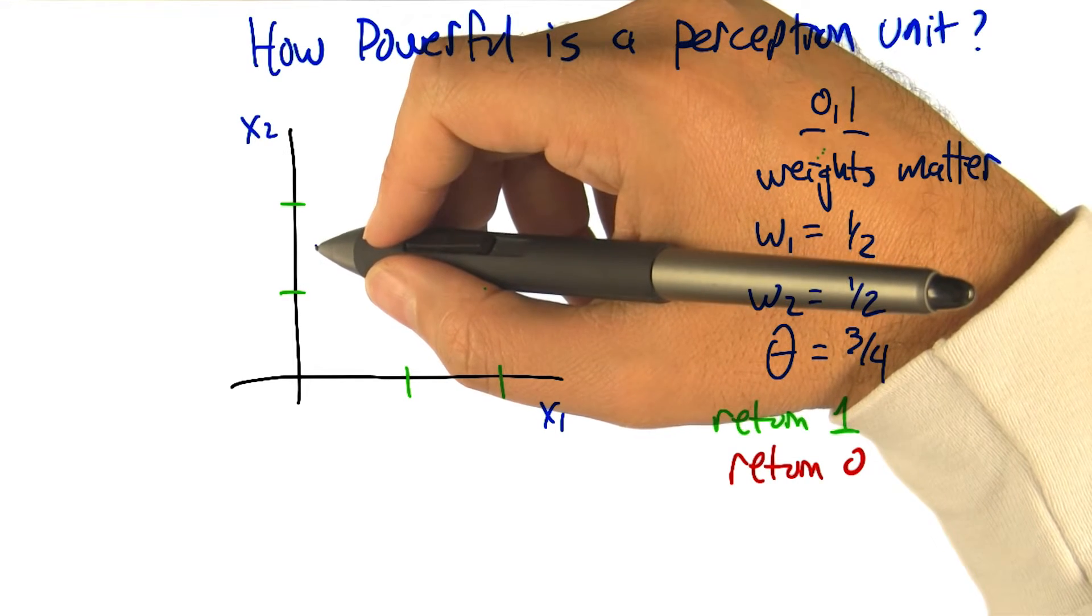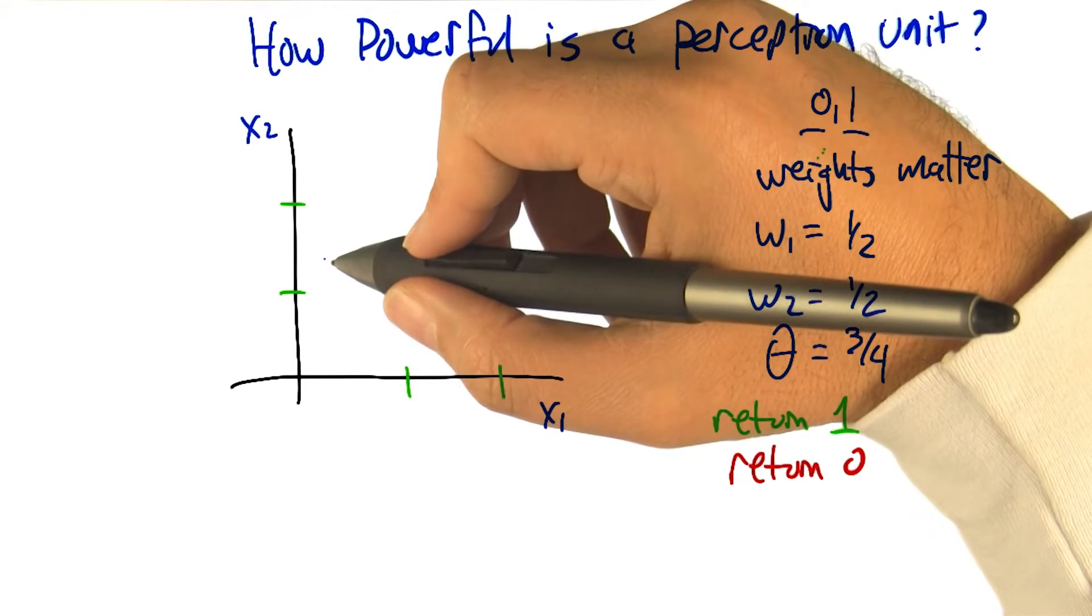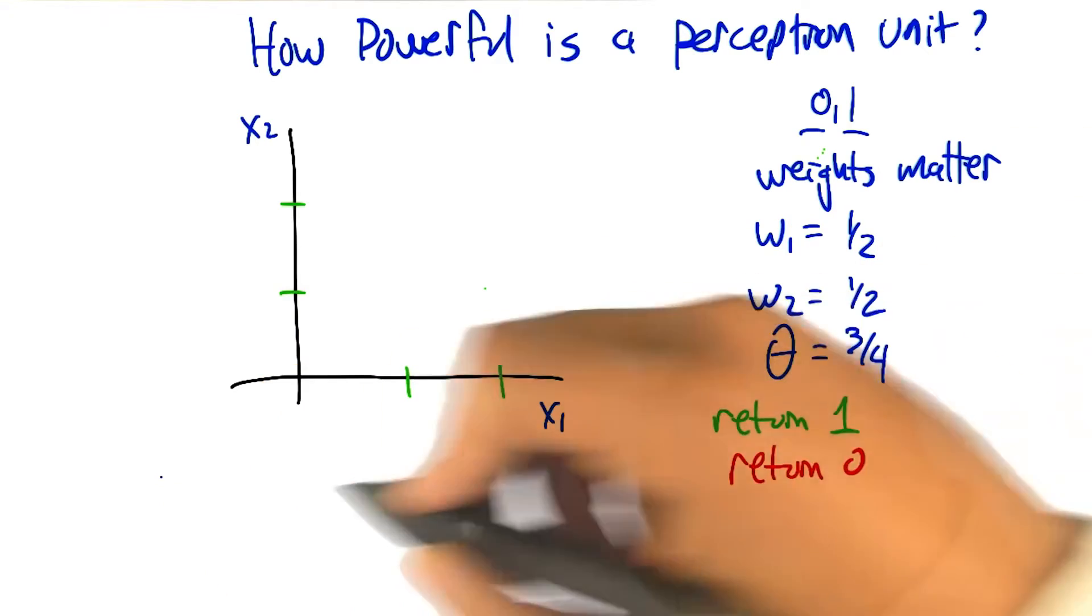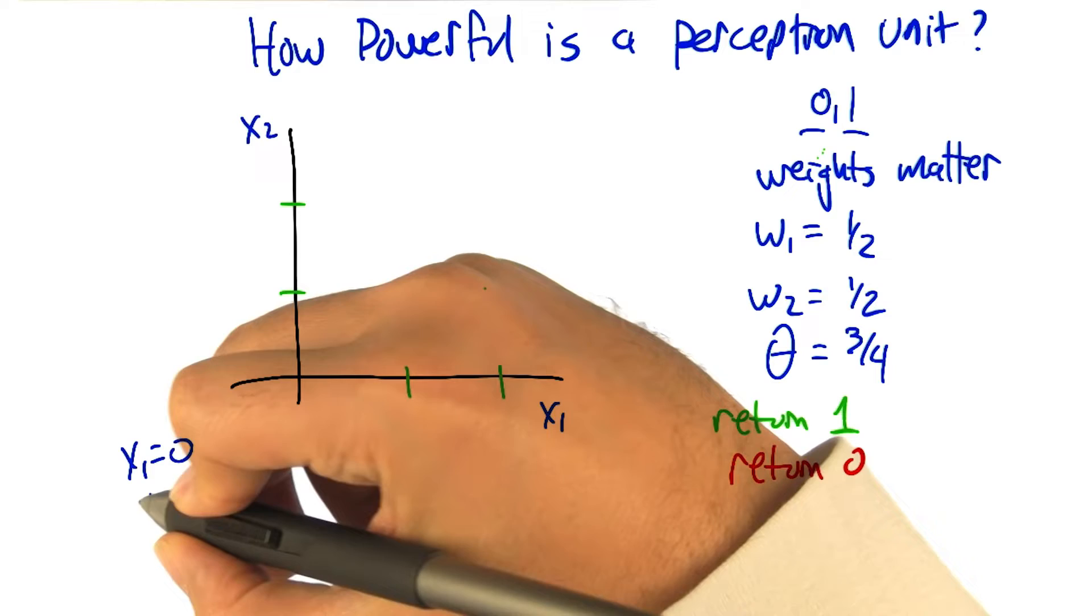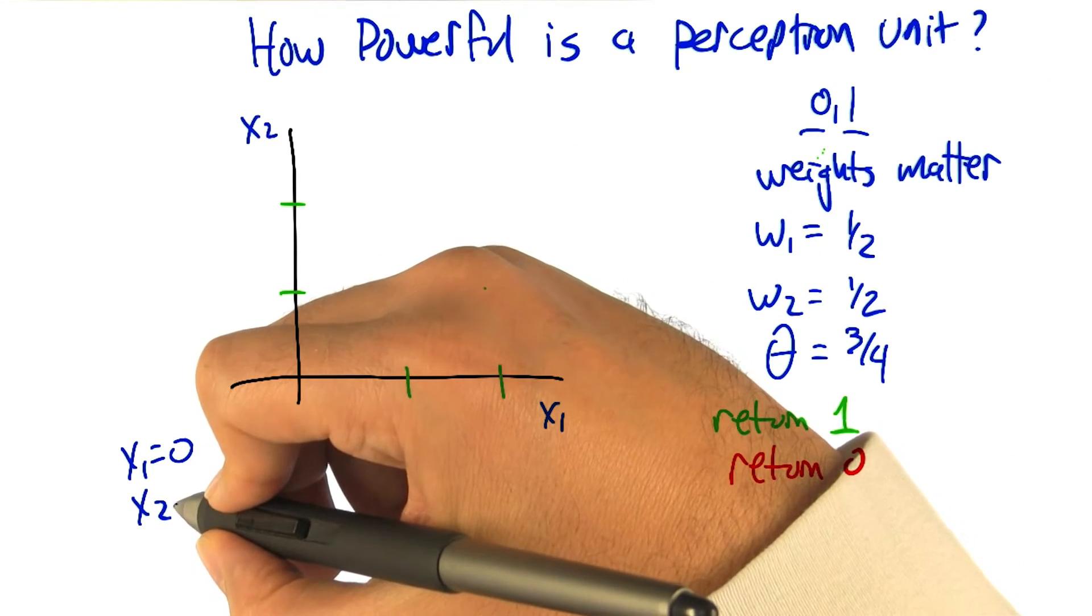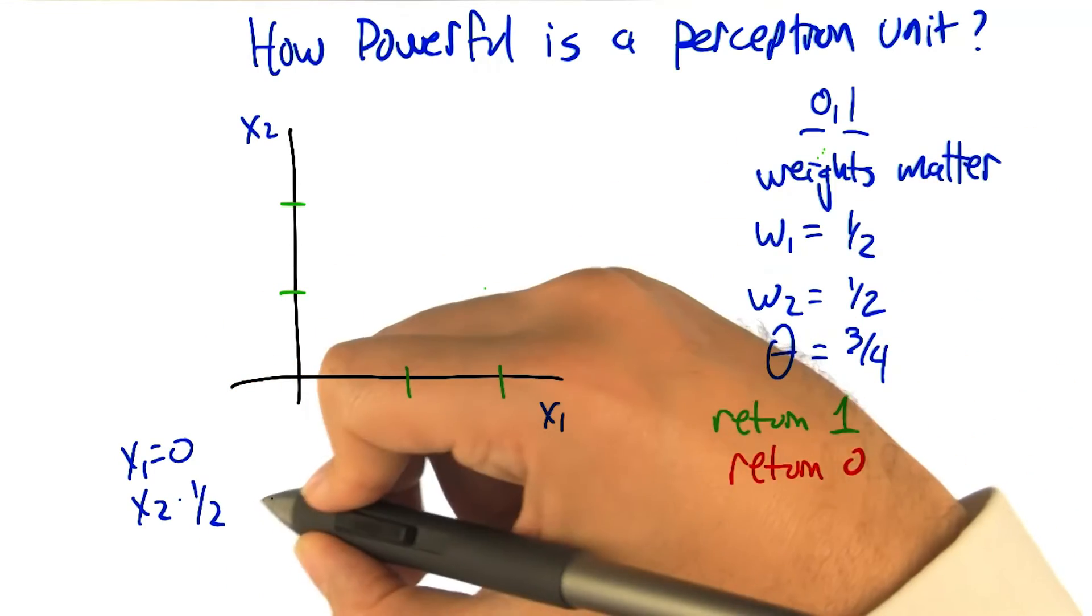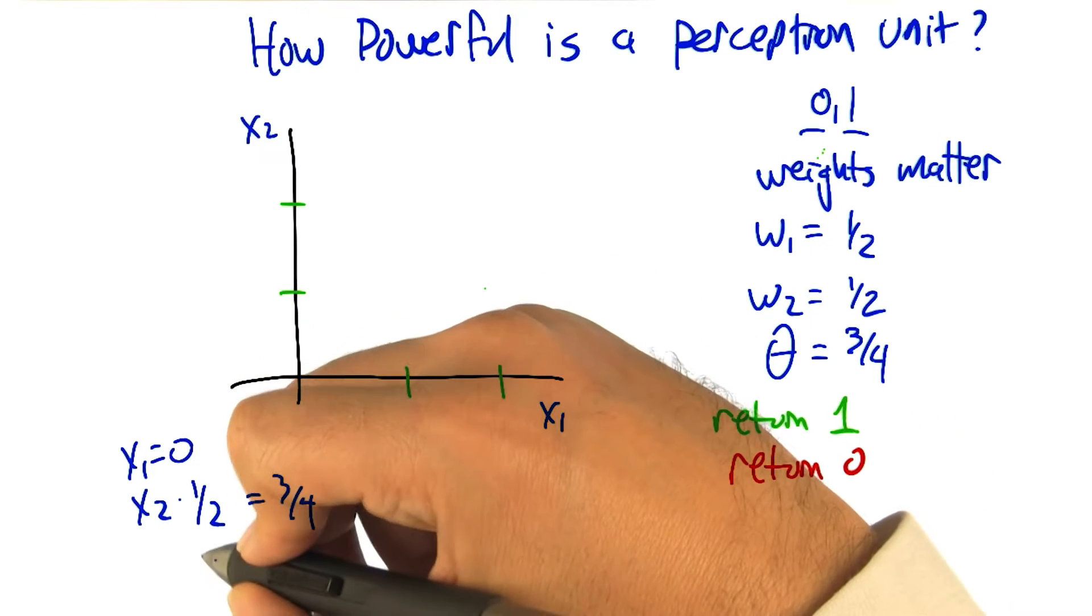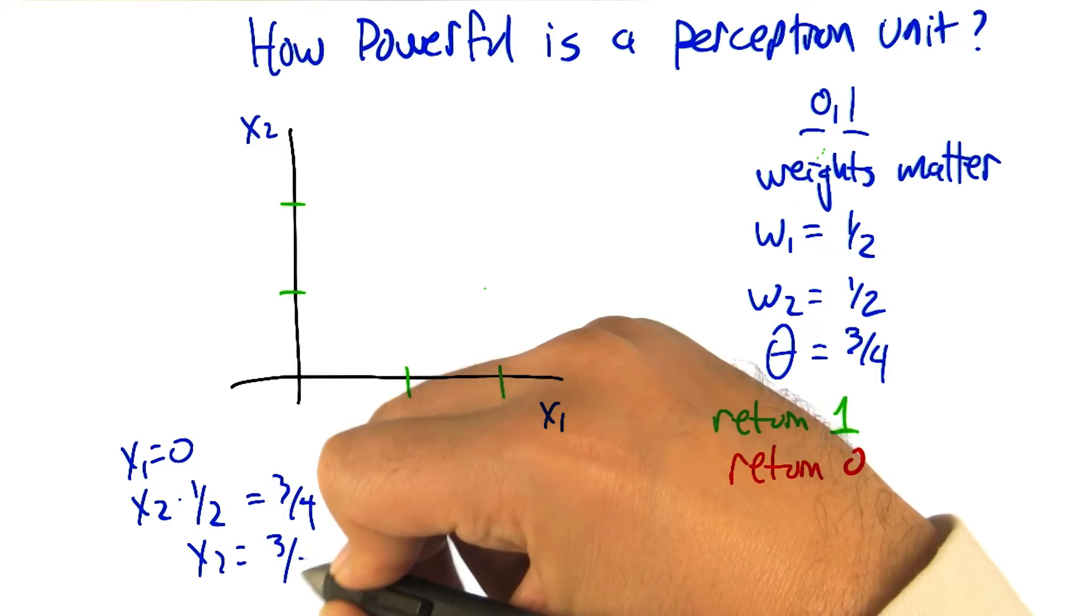Well, the weight on x2 is a half. So then the value of x2 would have to be twice as much as the threshold, which in this case is 1 and a half. We're trying to figure out where, if x1 is 0, does x2 need to be so that we're exactly at the threshold. x2 times the weight, which is a half, has to exactly equal the threshold, which is 3 quarters. If we solve that out, we get x2 equals 3 halves.